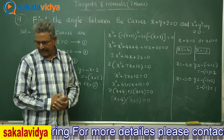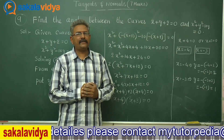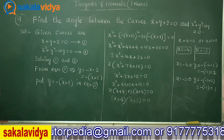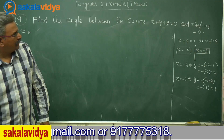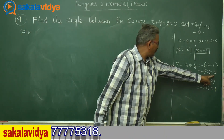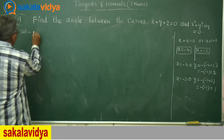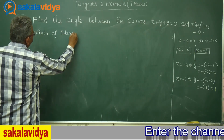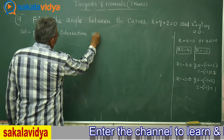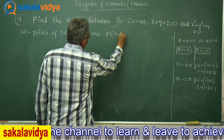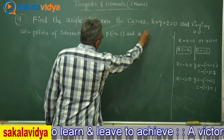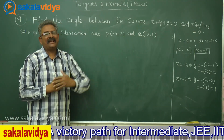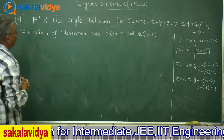Now let us write the points of intersection. Two points of intersection have been obtained. Points of intersection are P at minus 4 comma 2, and Q at minus 3 comma 1. At P, we have to find the angle between the curves. At Q also, the angle between the curves needs to be found.